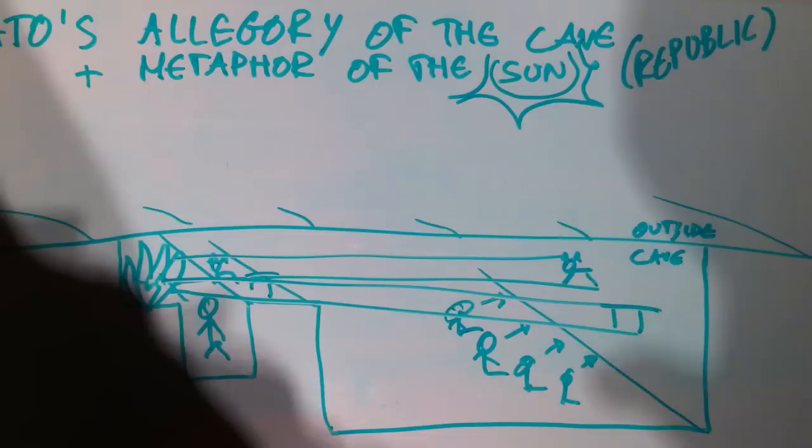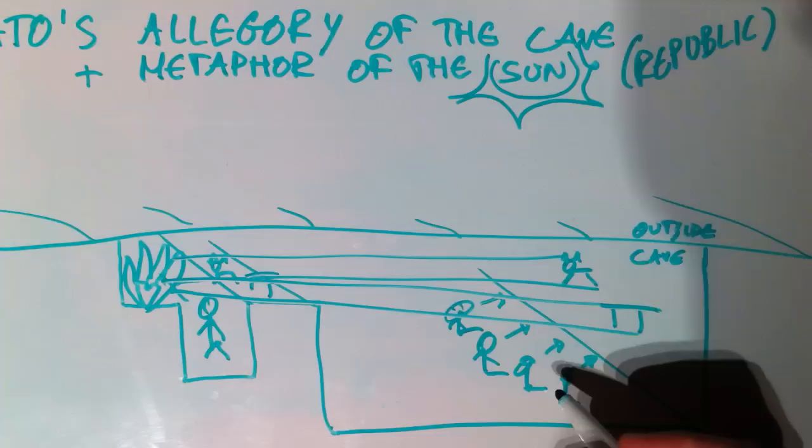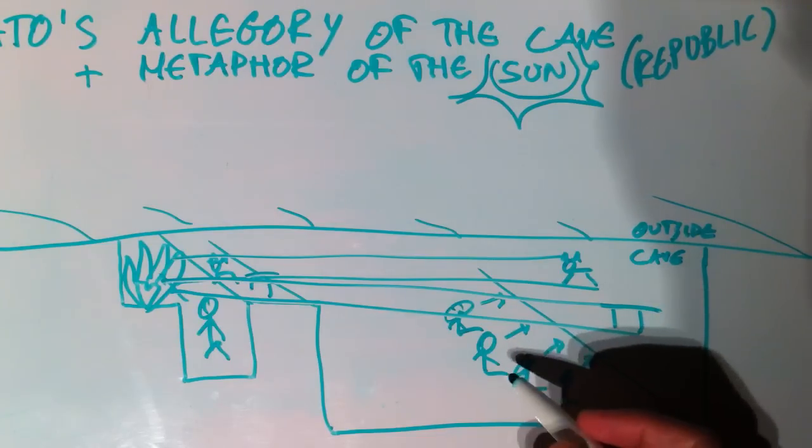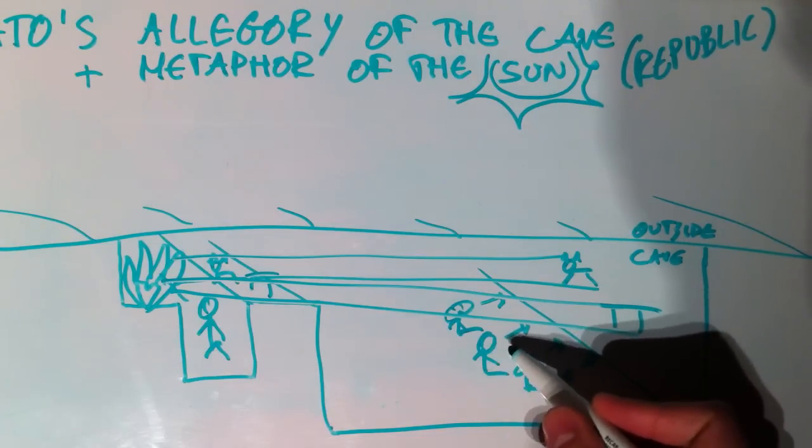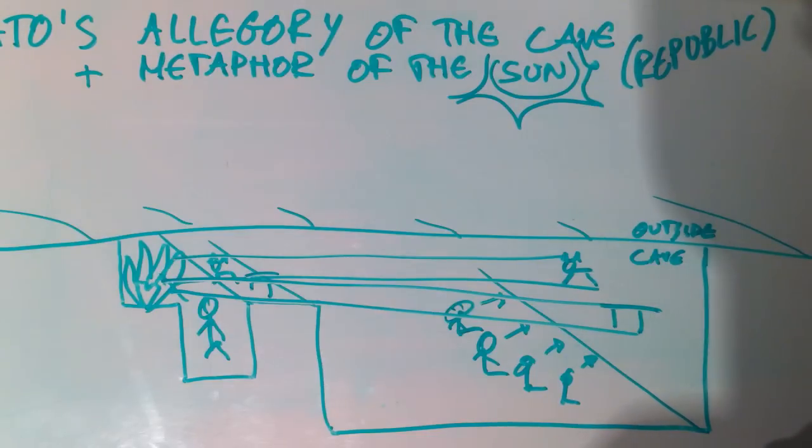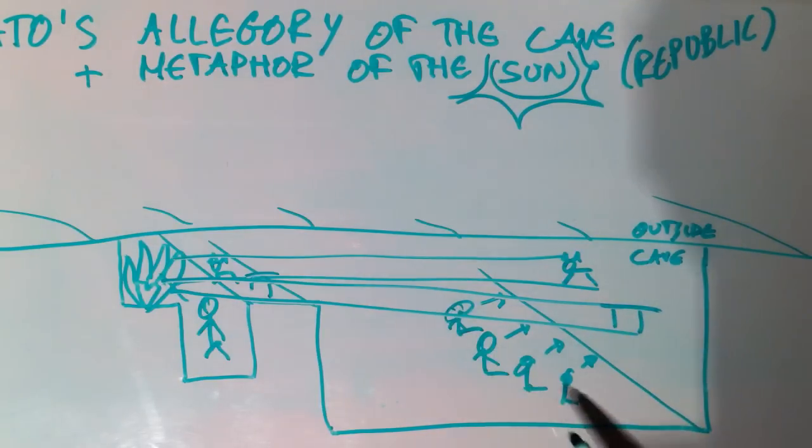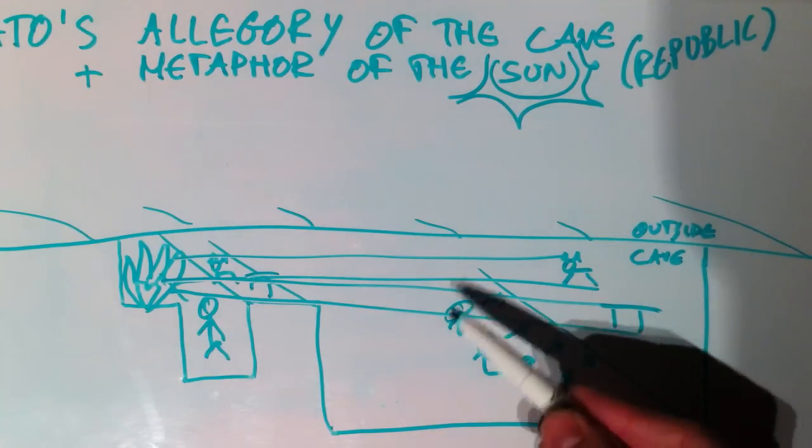Now it becomes interesting when Plato wonders what would happen if we release one of the prisoners. So let's say for all his life he has been watching this screen. By the way, this really looks like a movie theater. It's just amazing. You just see them sitting in front of that screen.